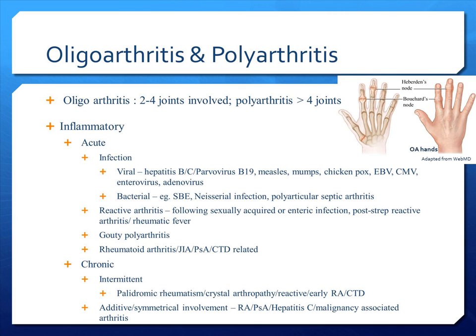As for those with chronic inflammation, it can be intermittent inflammation, whereby we see palindromic rheumatism, crystal arthropathy, reactive arthritis, early rheumatoid arthritis, or even connective tissue disease-related causes. And for those with additive or symmetrical involvement, do consider rheumatoid arthritis, psoriatic arthritis, thyroid disease, as well as malignancy-associated arthritis.